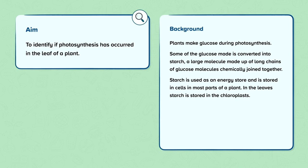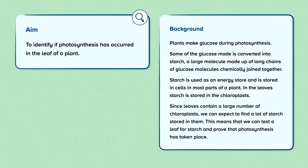Starch is used as an energy store and is stored in cells in most parts of a plant. In the leaves, starch is stored in the chloroplasts. Since leaves contain a large number of chloroplasts, we can expect to find a lot of starch stored in them.